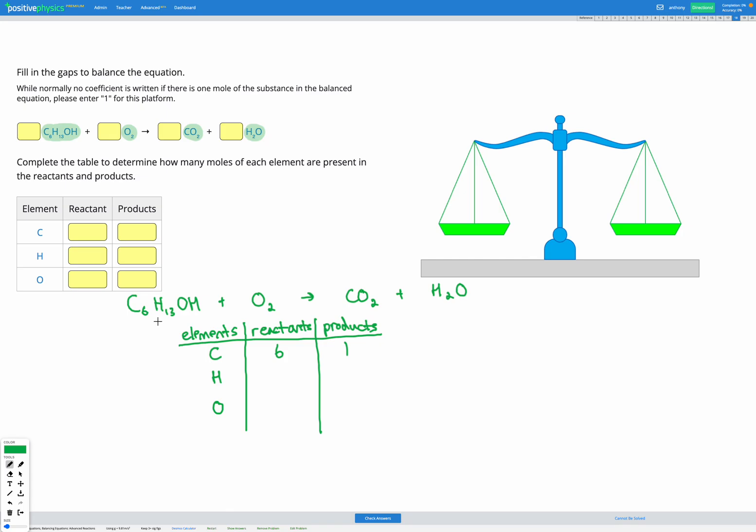As for H, we have 13 here and one here so that's 14 in total on our reactant side. On the right we have H2O so we've just got two H's in that compound.